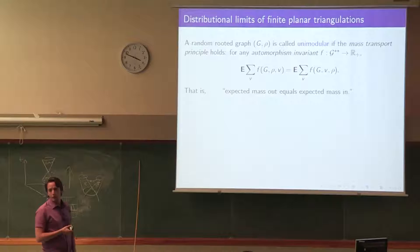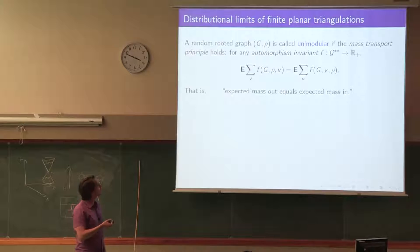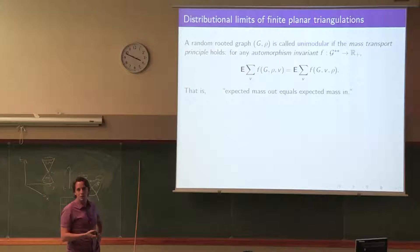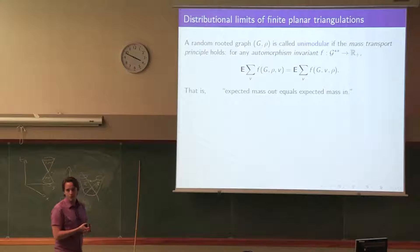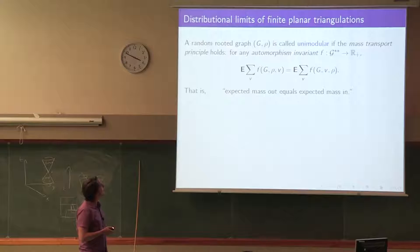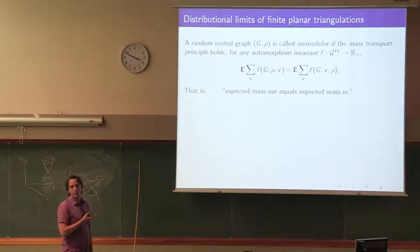A random rooted graph is called unimodular if for any such transport f, the expected mass out equals the expected mass in — the expected sum over all vertices v of f(G, rho, v) equals the expected sum of f(G, v, rho). This holds for Cayley graphs and for any distributional (Benjamini-Schramm) limit. There is a big open question in group theory: are all unimodular graphs obtainable as distributional limits?